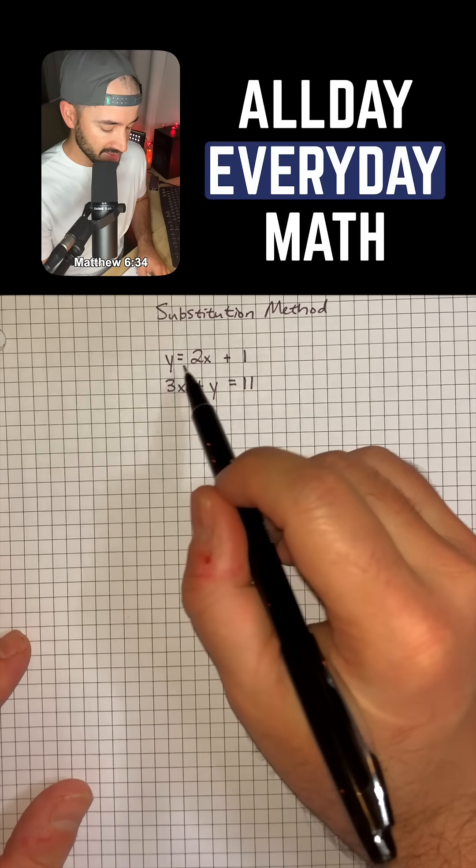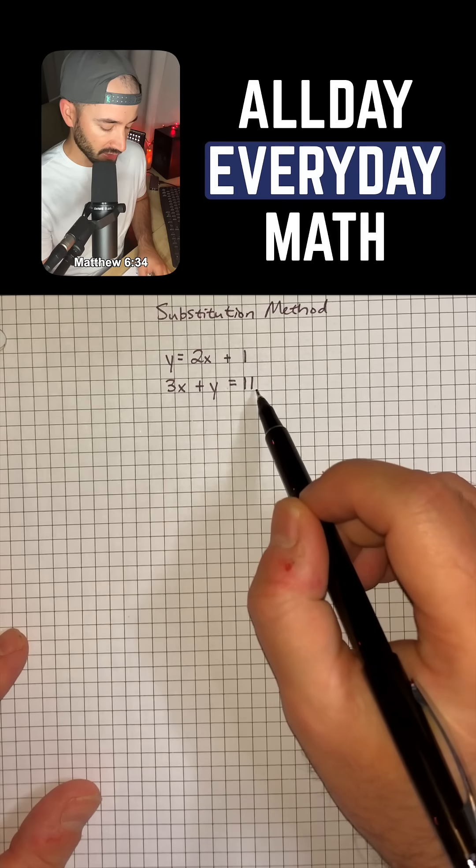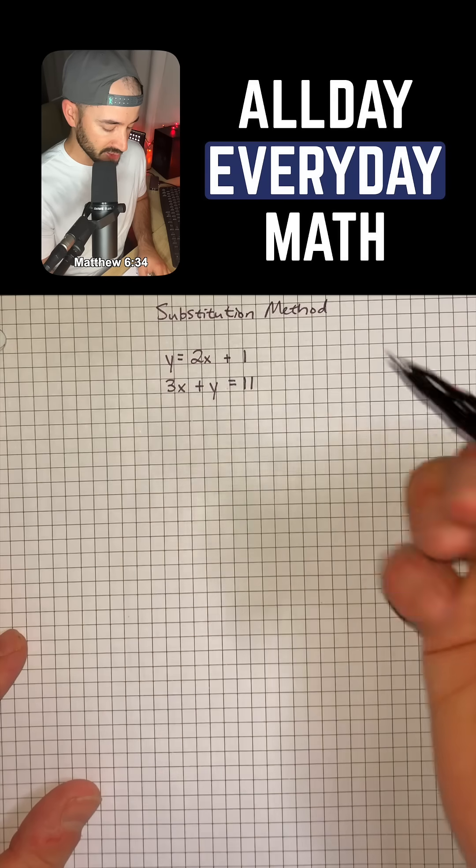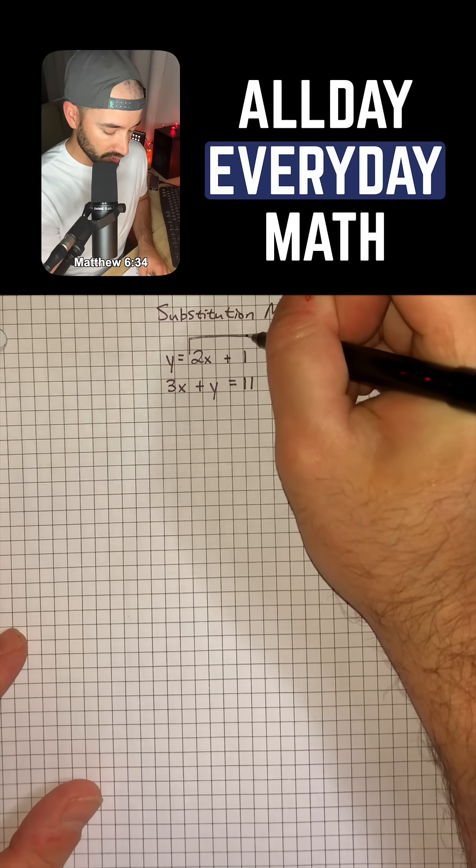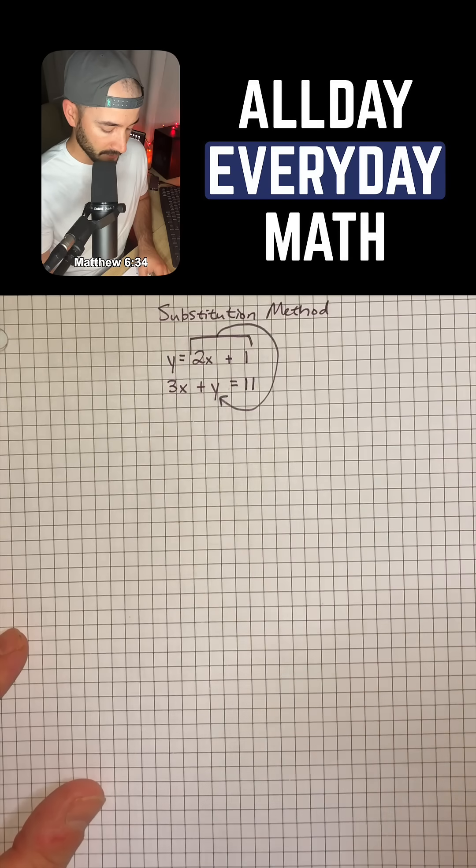So we have the system of equations y equals 2x plus 1 and 3x plus y equals 11. Because our first equation is already in y equals form, we can just take 2x plus 1 and substitute that in for y.